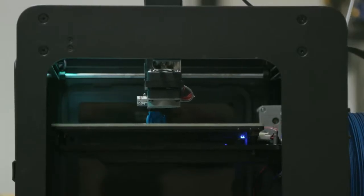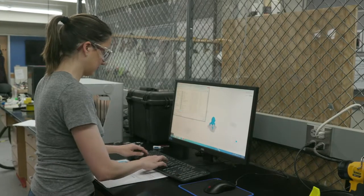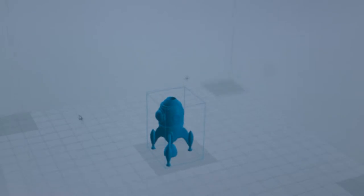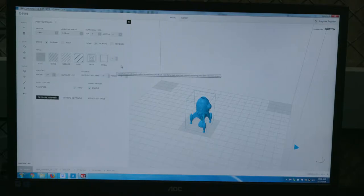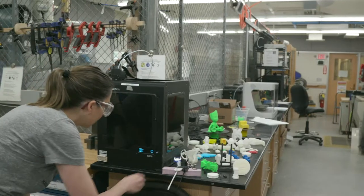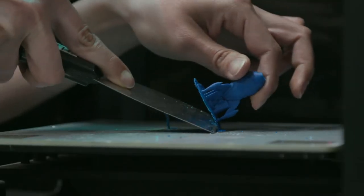When you 3D print, you generally follow this process. Create or obtain a CAD file. You can create your own CAD file, or you can download it. Slice CAD file and create tool paths for machine. Prepare machine. Print part. Finalize your piece.